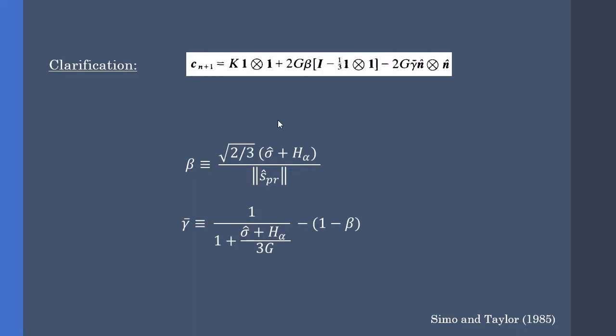Also, gamma and beta's H is the plastic modulus which can be non-linear. Sigma hat is the yield stress depending on the plastic strains.